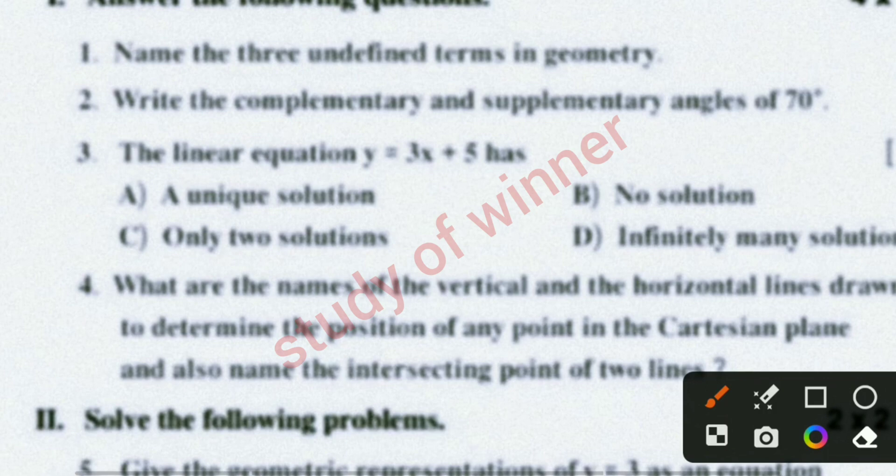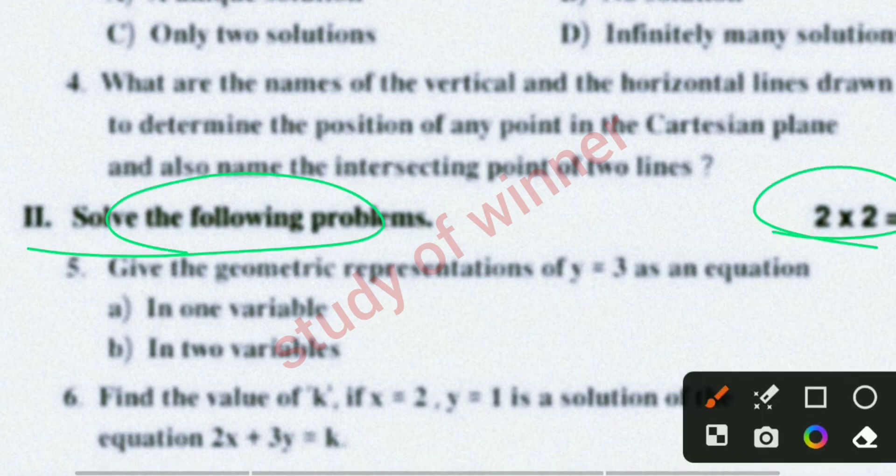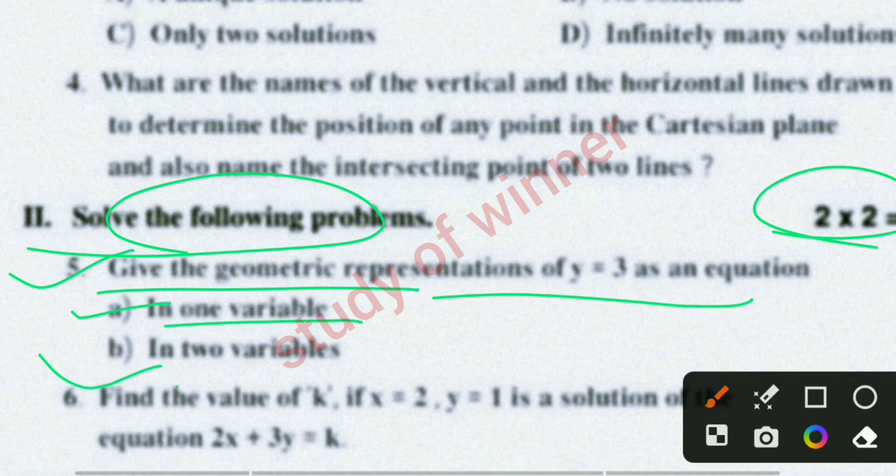You can see your fourth question. And then you can see your third question carries four marks. Your fifth question - in one variable and in two variables.